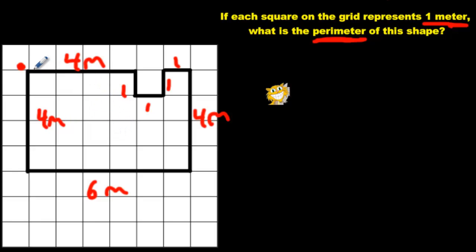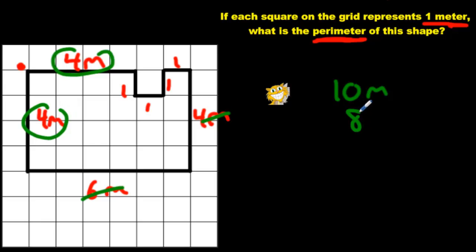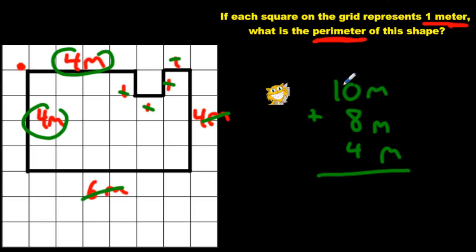The perimeter is when you add up all these numbers. I'm going to use an adding strategy — I'm going to color code this. Six and four: I know that's 10. We use strategies we learned in other units. We know six and four makes 10 without counting on our fingers. We also know doubles: four and four is eight. And one, one, one, one is also four meters. Now I just add them up: 10 plus 8 is 18, and four more is 22. And that's my perimeter.